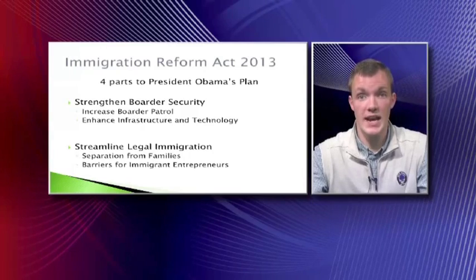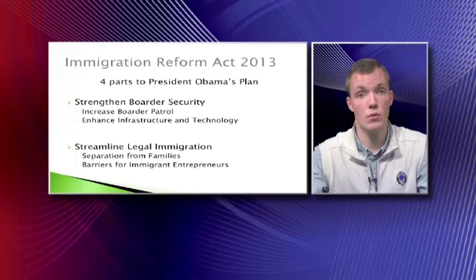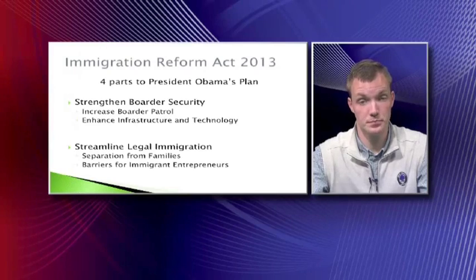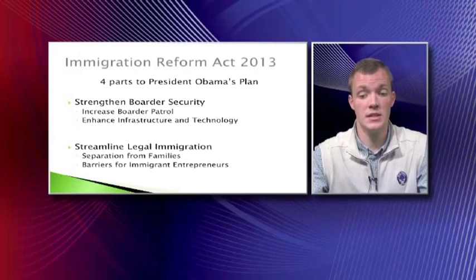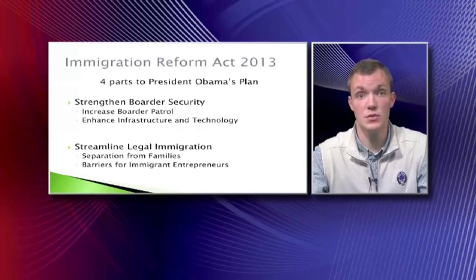The first part of this plan is to strengthen border security. President Obama's proposal is to strengthen U.S. border security through increased patrol, allowing fewer illegal immigrants to cross borders. Strengthening border security also helps enhance infrastructure and technology at places of entry, using updated technology to provide better ways of catching illegal immigrants.